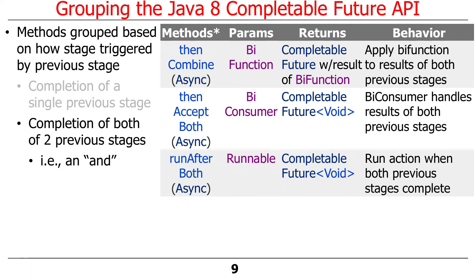There are also methods that work when two previous stages complete — you can think of these as the 'and' methods. Just like a logical AND, these only let their action be triggered when both previous stages complete successfully. The methods are thenCombine, thenAcceptBoth, and runAfterBoth. You can see they take BiFunction or BiConsumer parameters, meaning two things are coming in, and they apply the results of the previous stages to create a future result. Once again, there are async versions of each. We're going to show thenCombine in our examples.